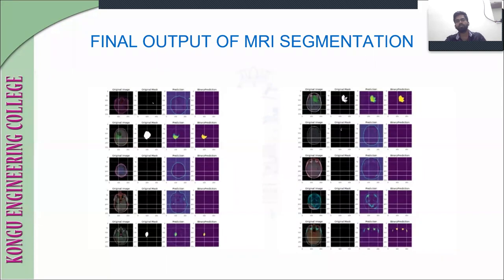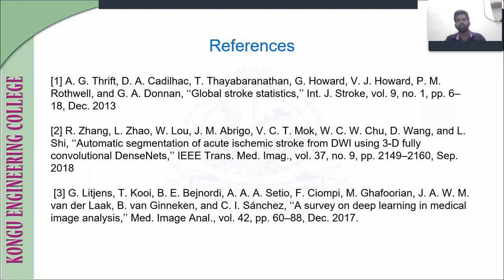This is the final output of our project. First, we give the input MRI scanned images with the mask image, then we perform some color correction and other processes using the U-Net architecture, and we get the final output as a binary prediction. These are the references we have referred to.